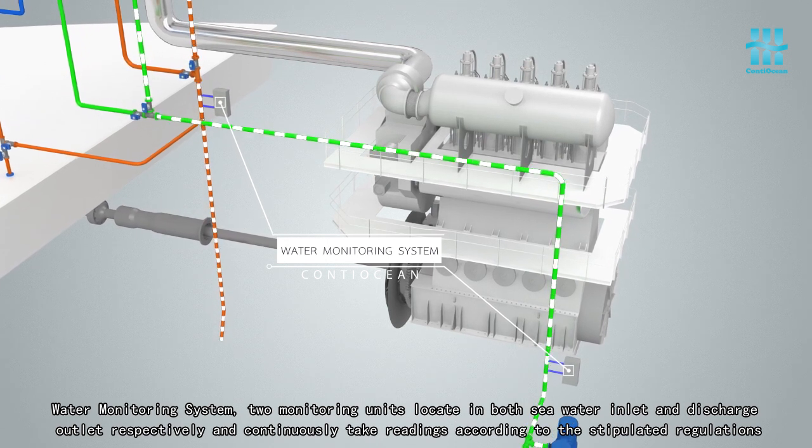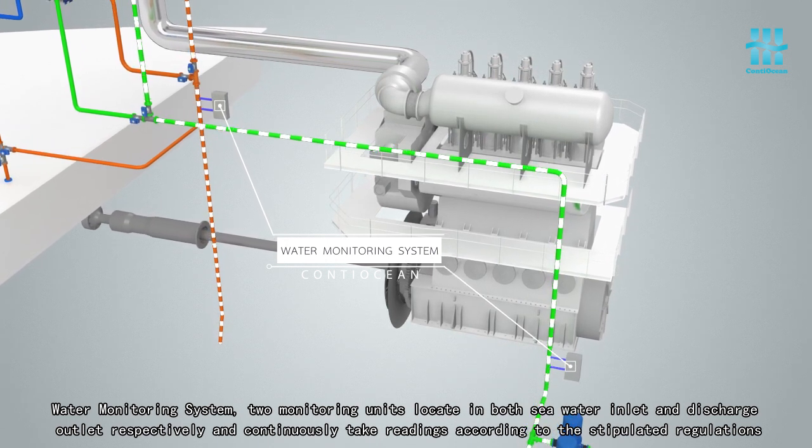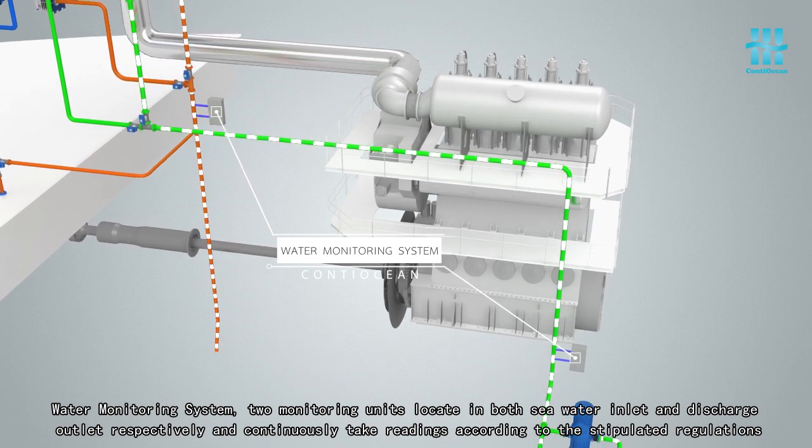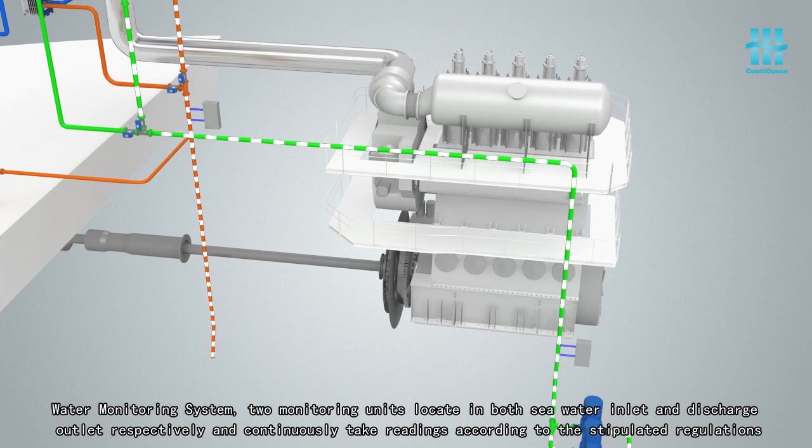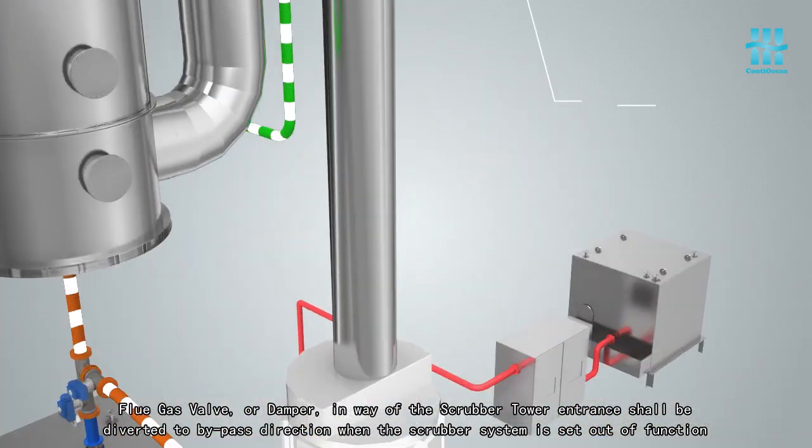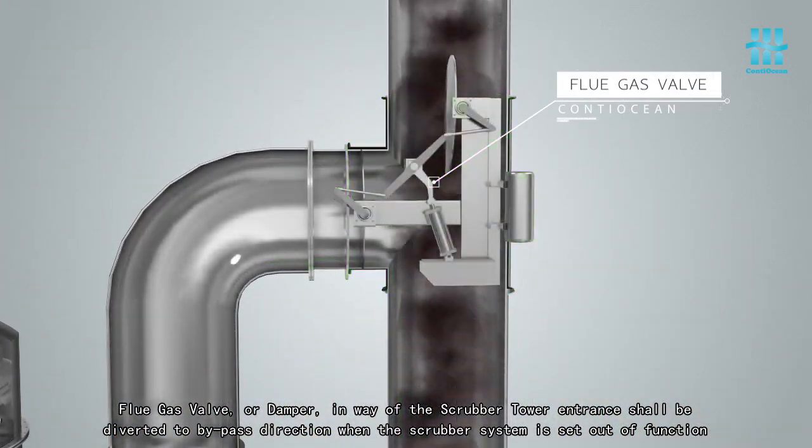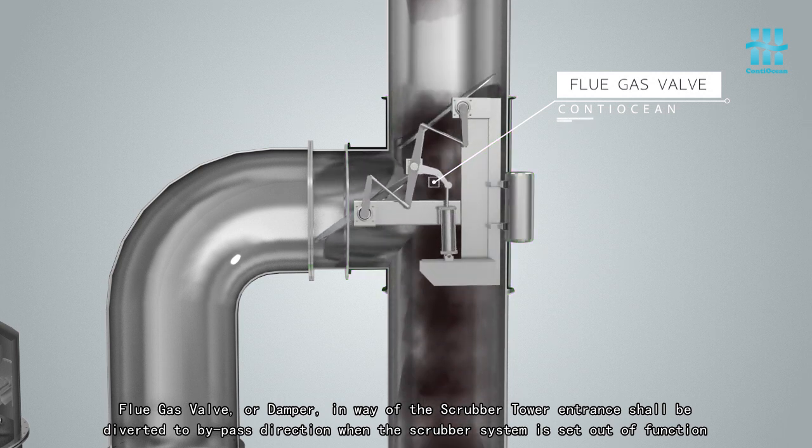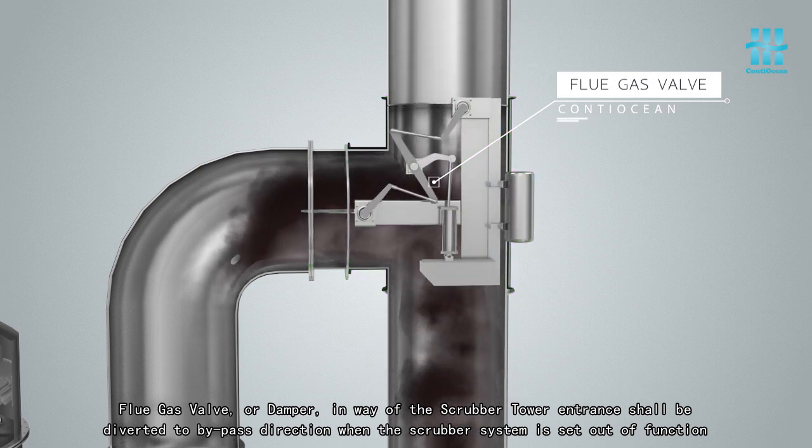Flue gas valve or damper in way of the scrubber tower entrance shall be diverted to bypass direction when the scrubber system is set out to function.